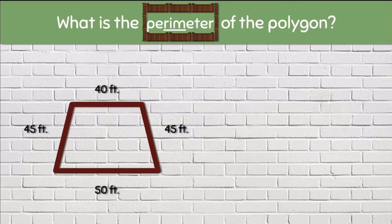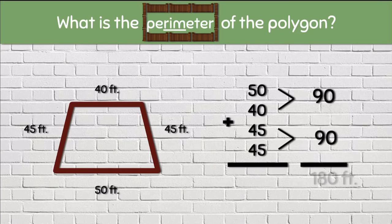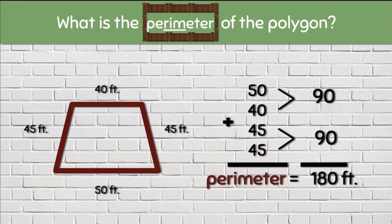Here we have a trapezoid with four sides. Let's add up all four sides. We know that 50 plus 40 makes 90 and we know that 45 plus 45 also makes 90. We can combine 90 and 90 and we get 180 feet. So we know that the perimeter is 180 feet.